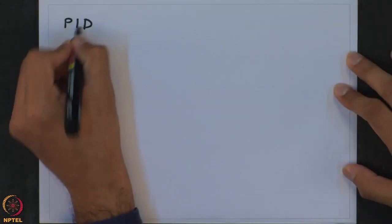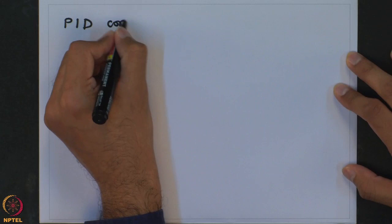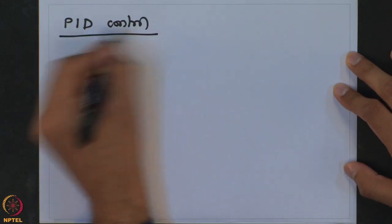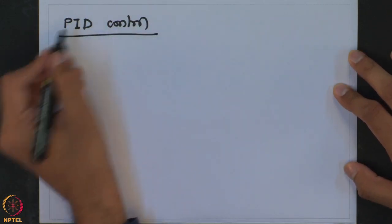Welcome back. Before the break we were looking at why we typically add a derivative action in addition to PI control. The reason is it improves the speed of response by having some sort of prediction about where the system is moving. With the help of that, what we get is known as a PID controller.